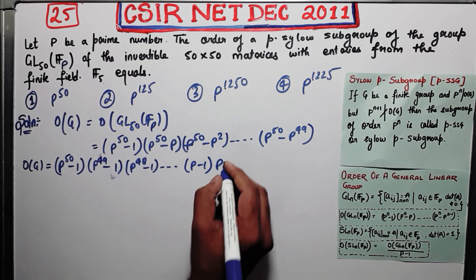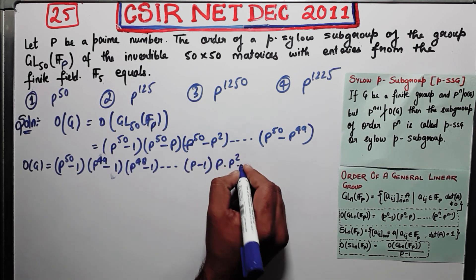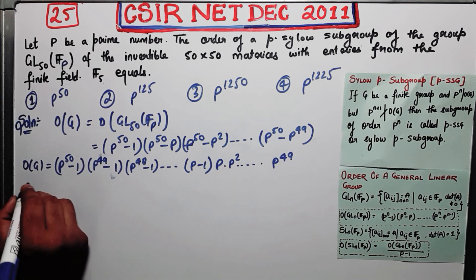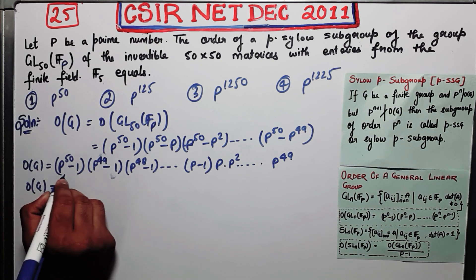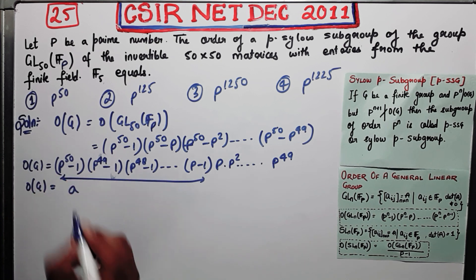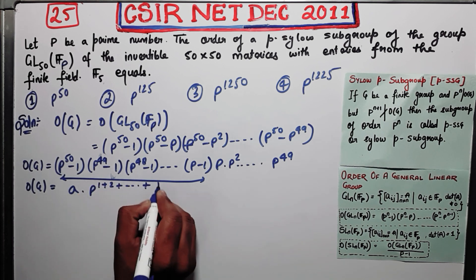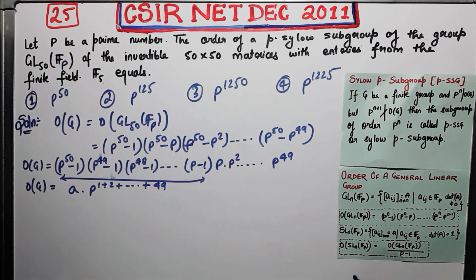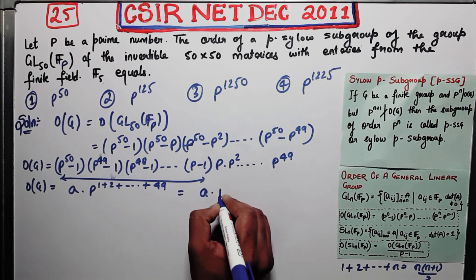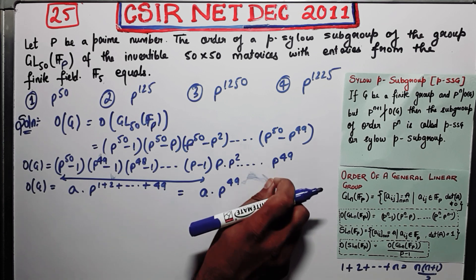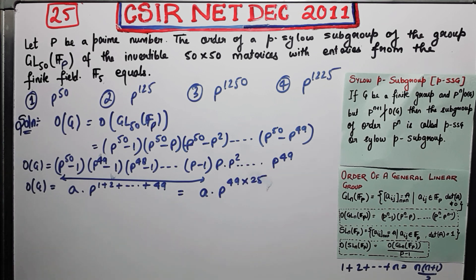You have taken P from one factor, P² from the next, and P^49 from the last. Let me call the remaining product 'a', so the order of G equals a · P^(1+2+...+49). The sum 1+2+...+49 is given by n(n+1)/2, which equals 49×50/2 = 49×25 = 1225. So the order of G equals a · P^1225.